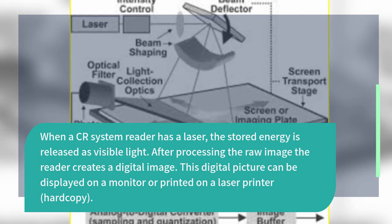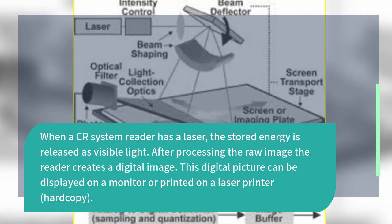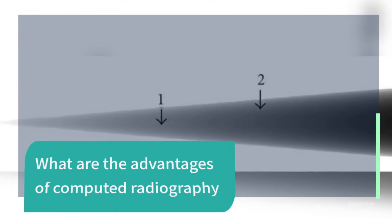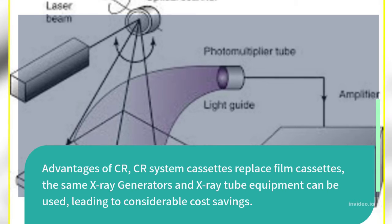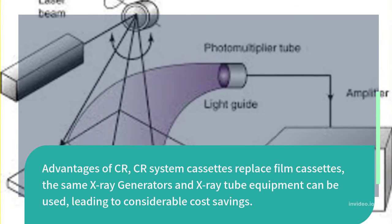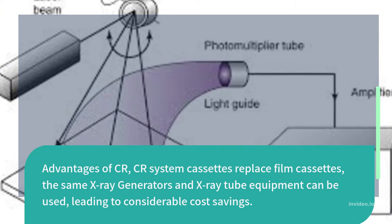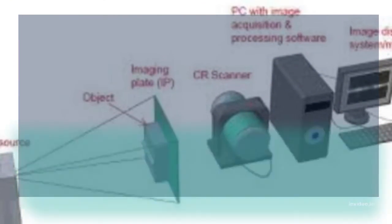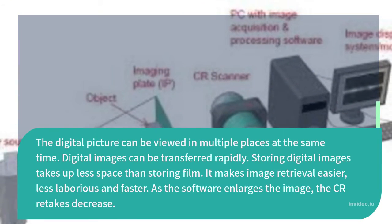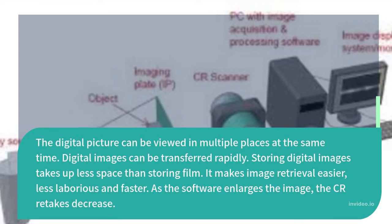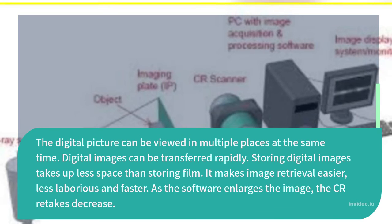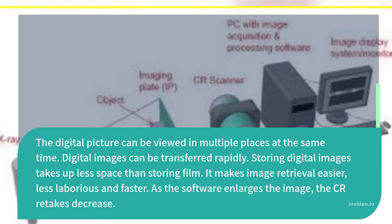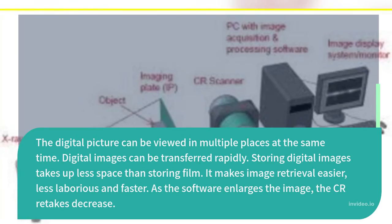What are the advantages of computed radiography? CR system cassettes replace film cassettes, and the same X-ray generators and X-ray tube equipment can be used, leading to considerable cost savings. The digital picture can be viewed in multiple places at the same time, and digital images can be transferred rapidly. Storing digital images takes up less space than storing film, making image retrieval easier, less laborious, and faster. As the software enlarges the image, CR retakes decrease.